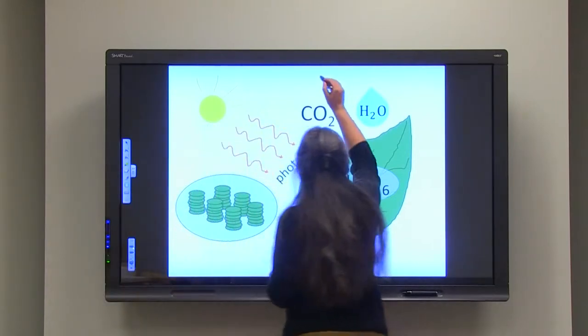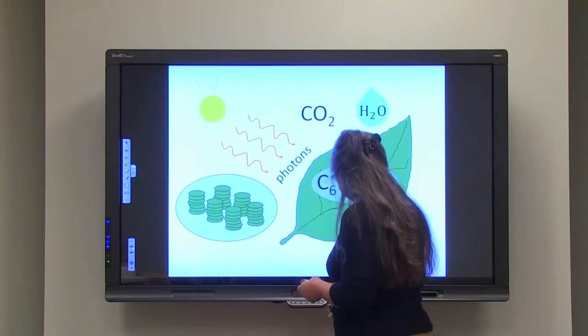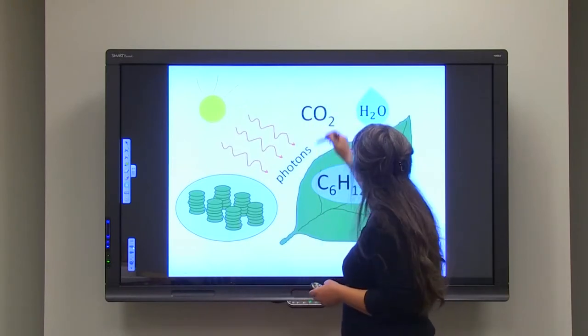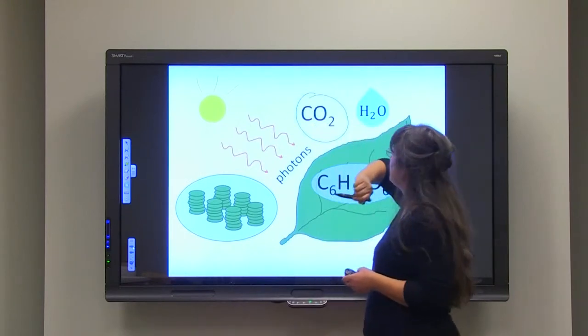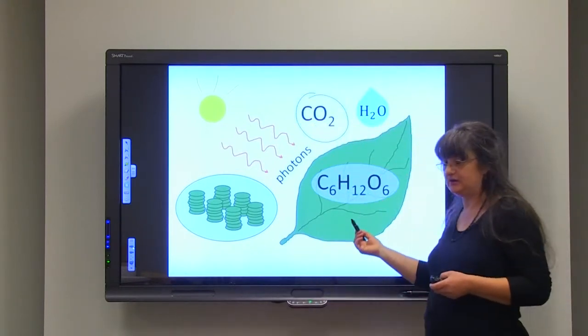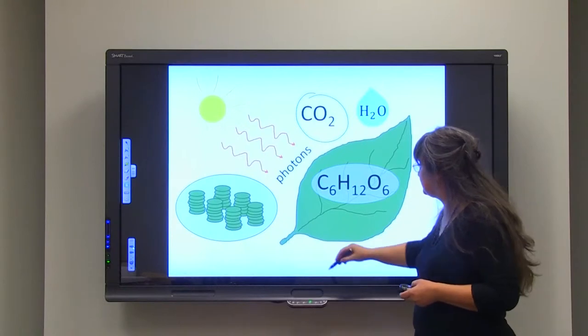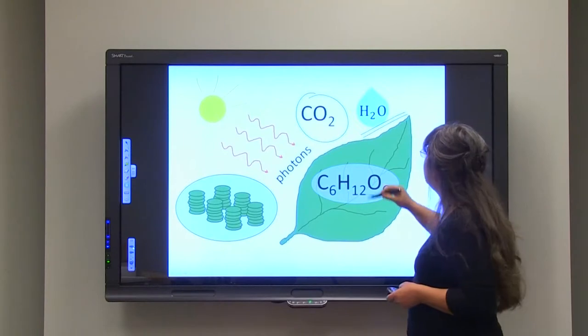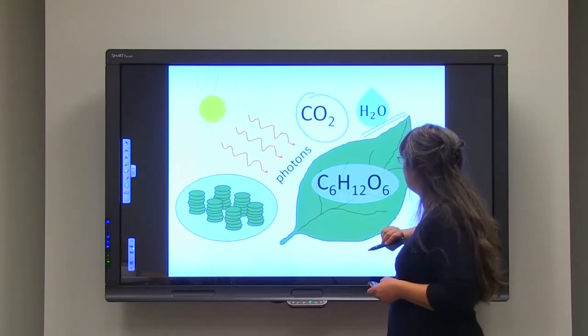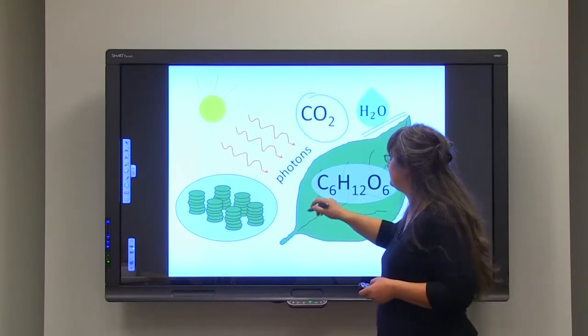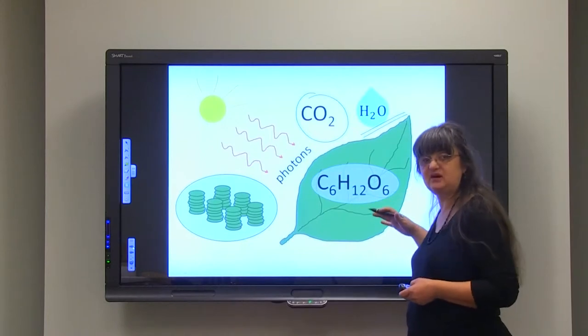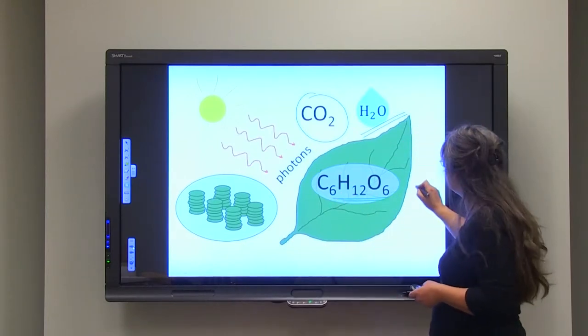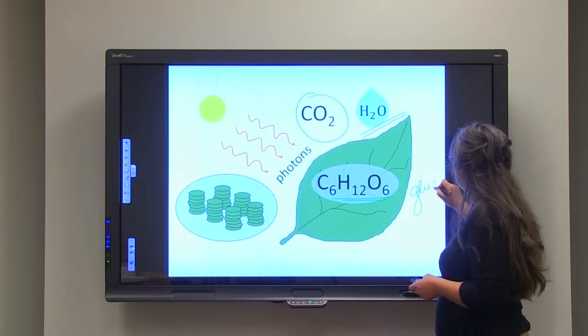They are utilizing carbon dioxide. Carbon dioxide from the air. And the plants are taking water from the ground. And from these two molecules, together with photons, in the process that is called photosynthesis, glucose is formed. Glucose.